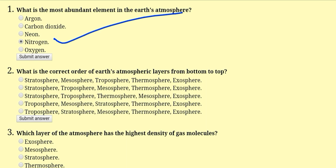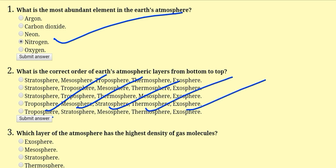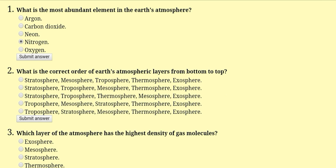What is the correct order of Earth's atmospheric layers from bottom to top? The atmospheric layers of Earth are divided based upon the nature of temperature — going up and down based upon temperature levels. The correct order is: troposphere, stratosphere, mesosphere, thermosphere, and exosphere.